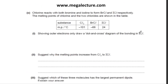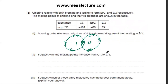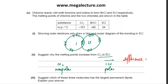Draw the dot-and-cross diagram of ICl. I and Cl are drawn with the bond between them. The melting point increases from Cl2 to ICl because the molecules become more polar — Cl is more electronegative, so Cl2 is non-polar but ICl is polar. The difference in electronegativity increases, leading to stronger permanent dipole–permanent dipole interactions.